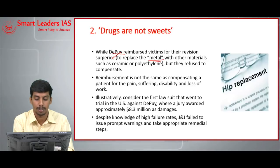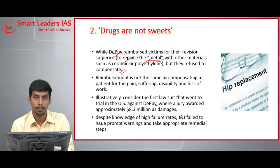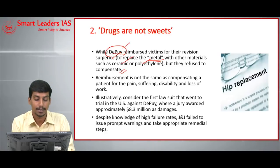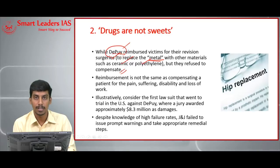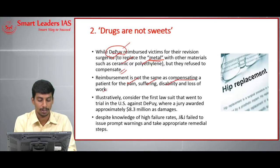While DePuy reimbursed victims for revision surgeries — replacing metal components with ceramic and polyethylene — it refused to pay compensation for pain, suffering, disability, and loss of work caused by the faulty product. Reimbursement covers the cost of corrective surgery due to the company's fault, but compensation for the broader harm suffered by patients was denied.